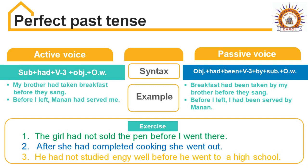Now come to the next example. Before I left, Manon had served me. To make it passive, find out the object — what did Manon serve? 'Me' is the object, so 'me' becomes the subject pronoun 'I'. Then comes 'had been', then the past participle 'served', then 'by Manon'. So the passive is: Before I left, I had been served by Manon. There is an exercise given for homework.